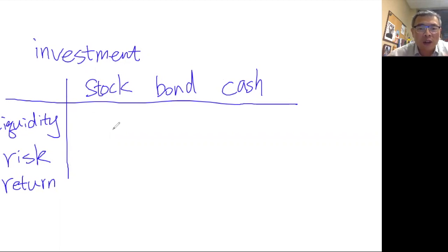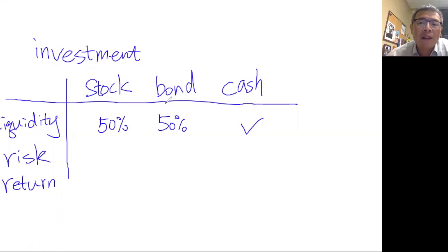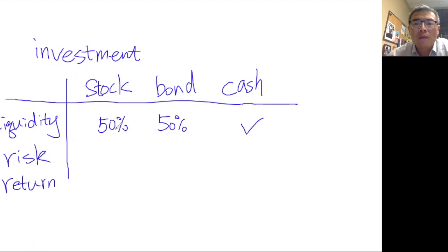You can compare these three investments across liquidity, risk, and return. Liquidity refers to how easy it is to convert back to cash. Cash is 100% liquid — you can use it anytime. Stock is generally easy to sell in the market, though if you sell at a bad time when the value is lower than when you bought it, you lose money. Some bonds, like long-term government bonds of 10 years, are less liquid because selling early may cost you the interest.